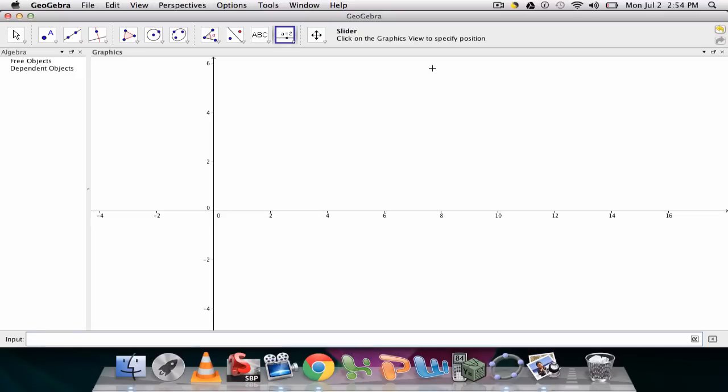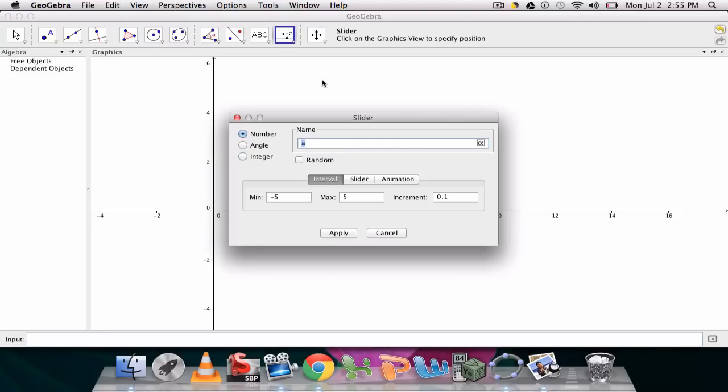In this video we're going to use GeoGebra to set up the intersection of two lines. So my first step is to click my slider tool right here and tell GeoGebra I want the slider right here.